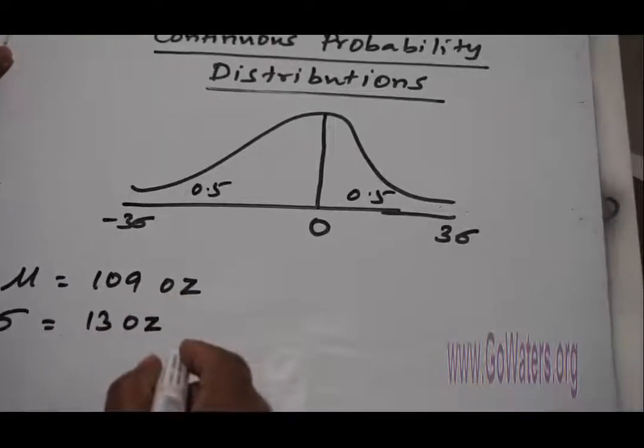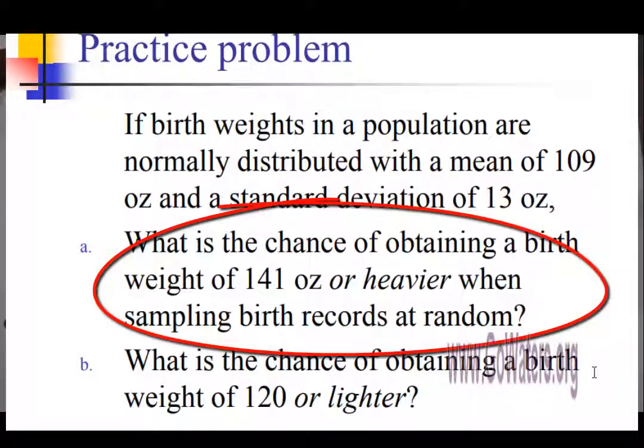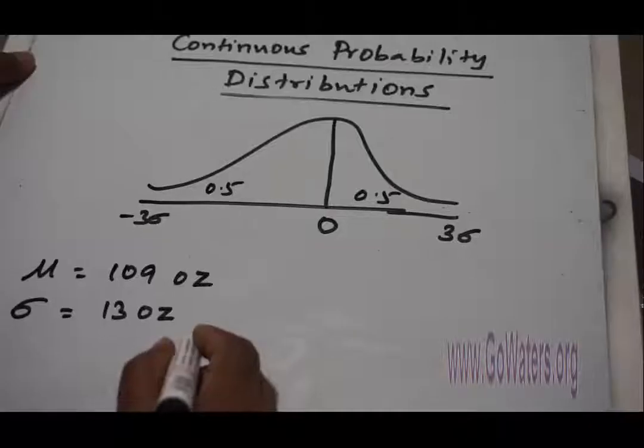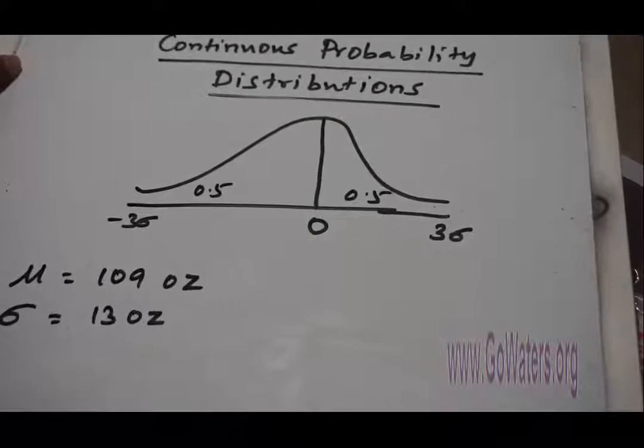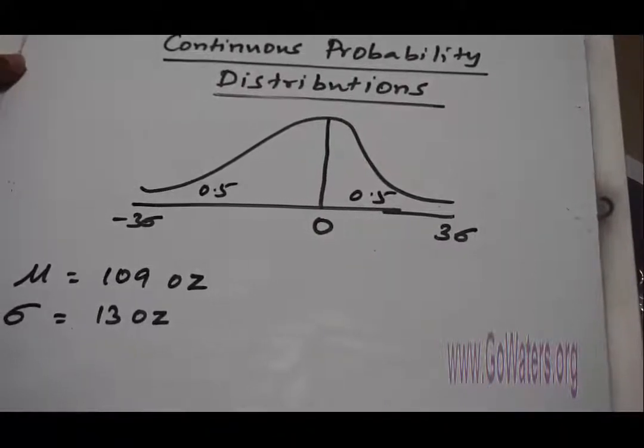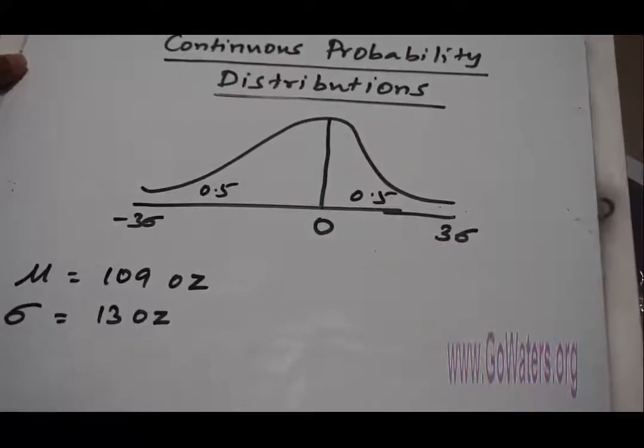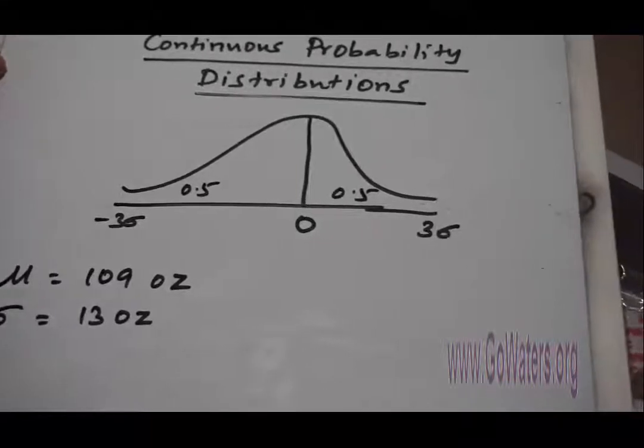What is the chance of obtaining a birth weight of 141 ounces or heavier when sampling birth records at random? Similarly, you have another problem: What is the chance of obtaining a birth weight of 120 or lighter? I'm going to solve these two problems now.